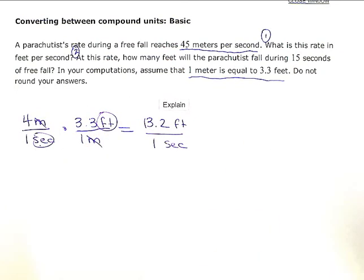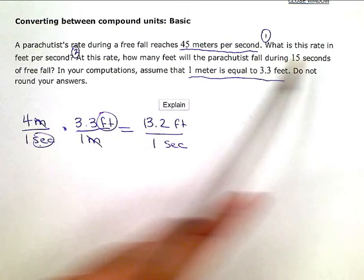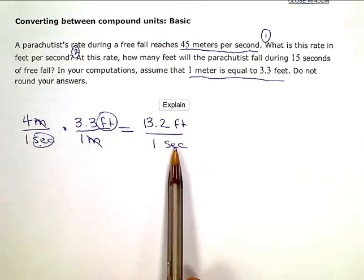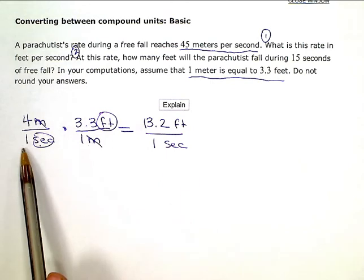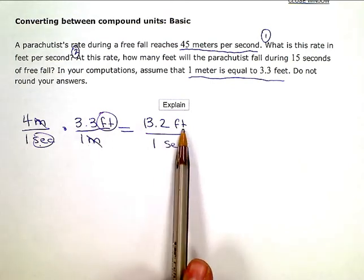So question number one, what is this rate in feet per second? That one I've already figured out. Now, 4 meters every second is the same as 13.2 feet every second.